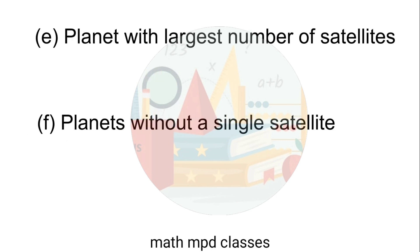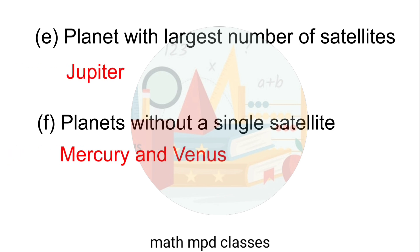Planet with largest number of satellites — Answer: Jupiter. Next, planets without a single satellite — Answer: Mercury and Venus.